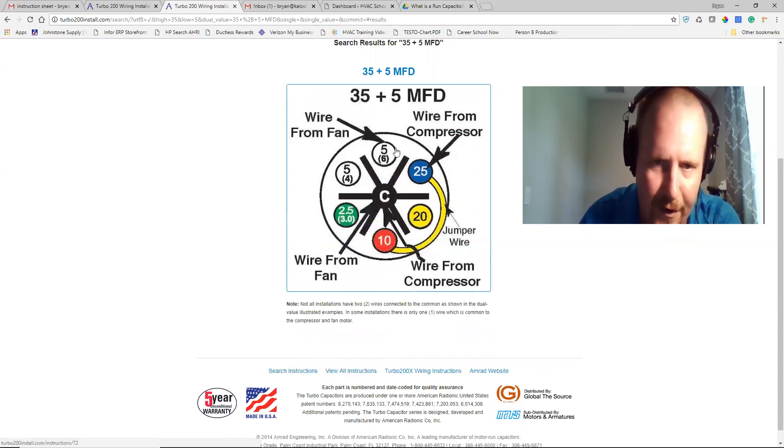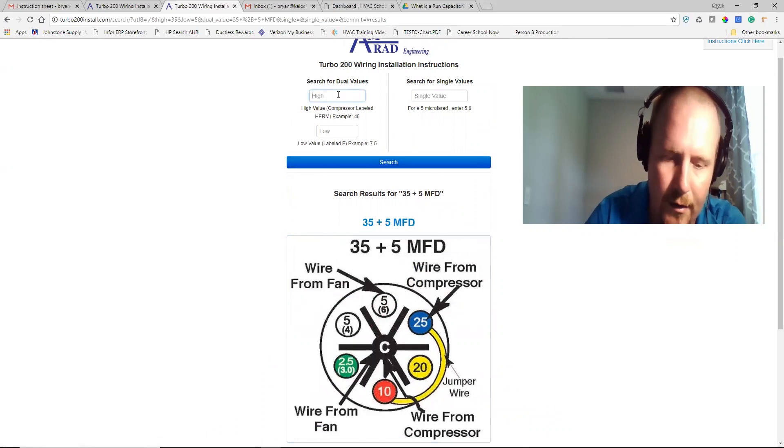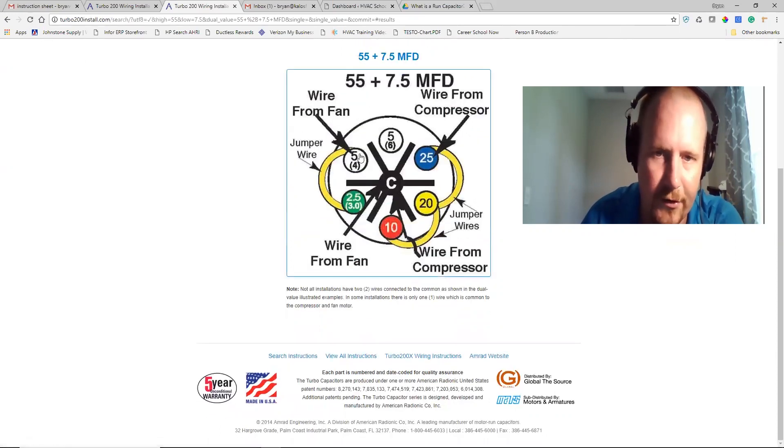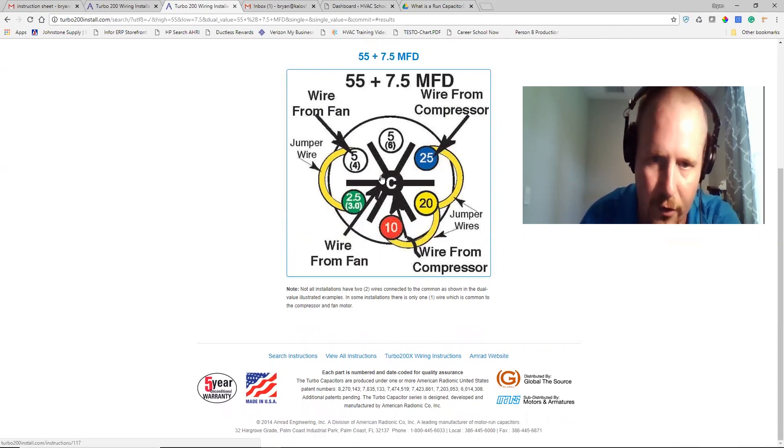Super easy because you already have a five. You use the five. All right, so now let's try something a little bigger. Let's go with 55 by 7.5. Let's see what we got. There you go. So you take the five, jump it to the 2.5. Now you have 7.5. Now this is your fan. It goes to your fan, start winding. This goes to your compressor, start winding what would typically be called Herm. And then all of them in the center are common. And you jumper these together. So you have 25 plus 25. That's 45 plus 10. That's 55. Super simple. Very easy to use.